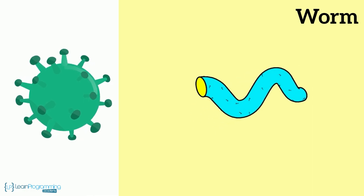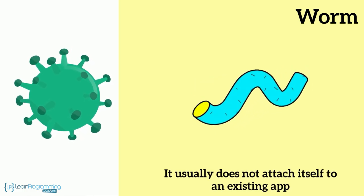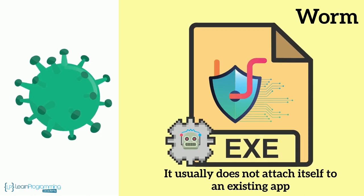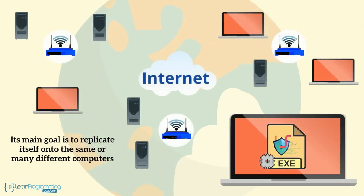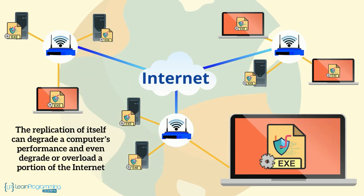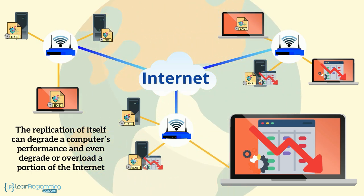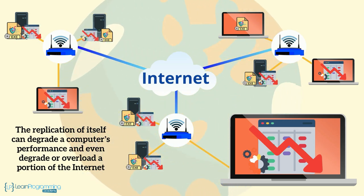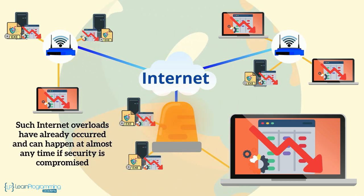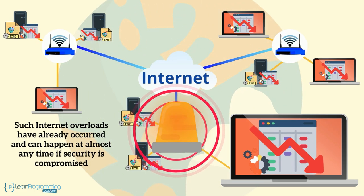A worm is like a virus; however, it does not attach itself to an existing app, but is its own app that automatically launches itself and executes. Its main goal is to replicate itself onto the same or many different computers. The replication of itself can degrade a computer's performance, and if it replicates to many different computers, the worm can degrade or overload a portion of the internet. Such internet overloads have already occurred and can happen at almost any time if security is compromised.